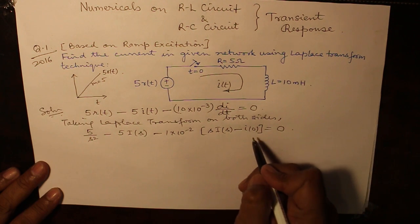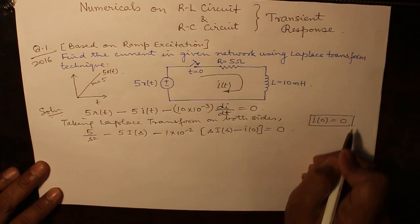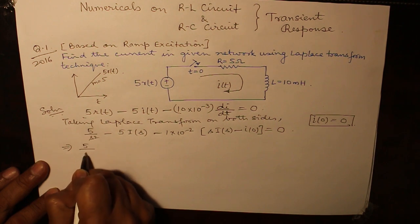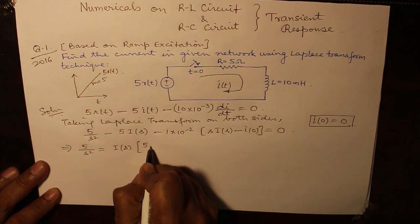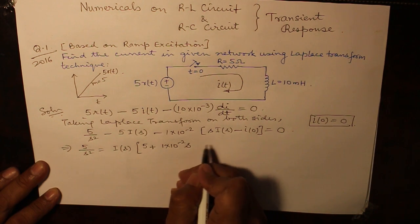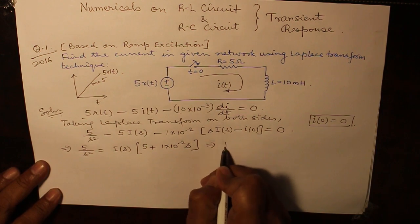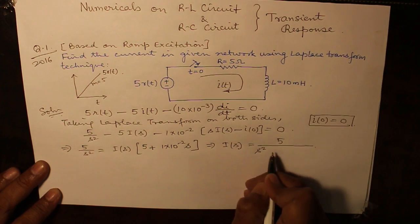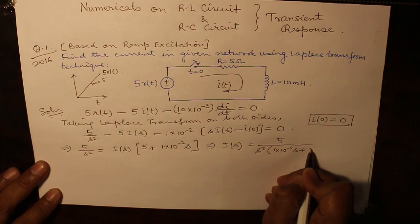Since in the question I0 has not been specified, we will take I0 as 0. So this gives you 5 over S square as being equal to IS multiplied by 5 plus 1 into 10 raised to the power minus 2 S. Therefore, IS can be written as 5 over S square equals 1 into 10 raised to the power minus 2 S plus 5.